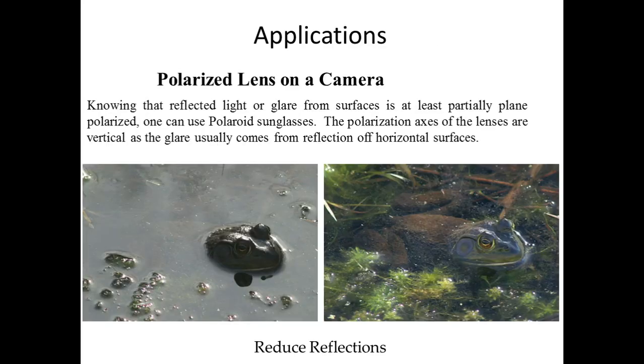If we look at applications, we can have polarized lenses on cameras. Knowing that reflected light from surfaces is at least partially plane polarized, one can use polaroid sunglasses. The polarization axes of the lenses are vertical, as glare usually comes from reflection off horizontal surfaces.